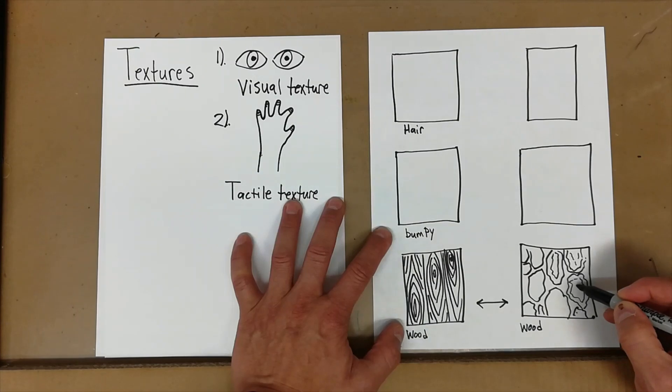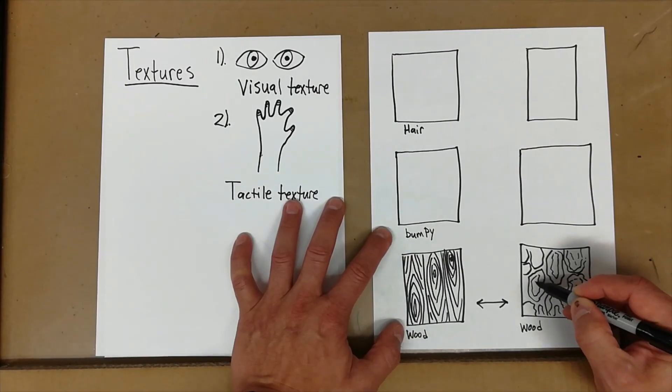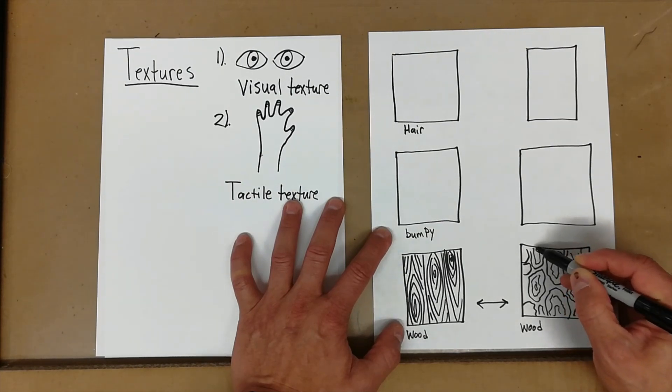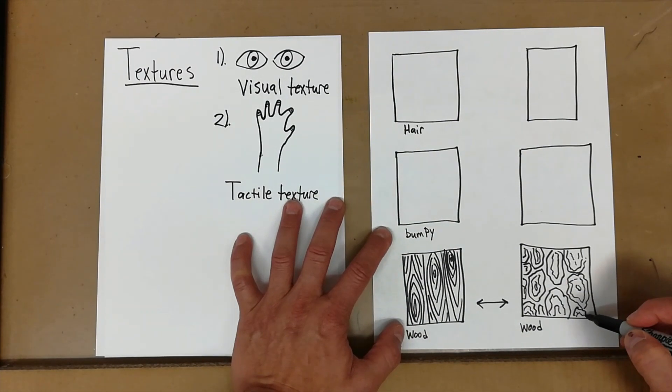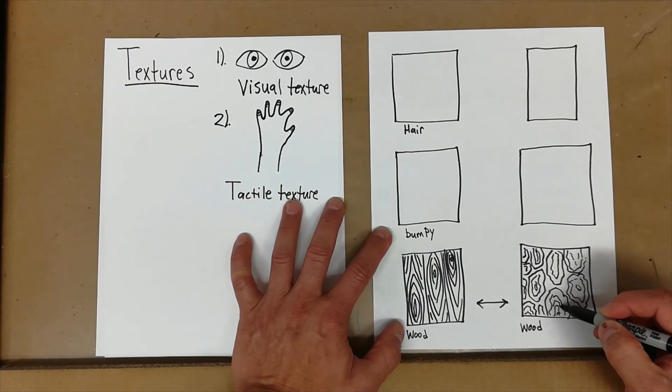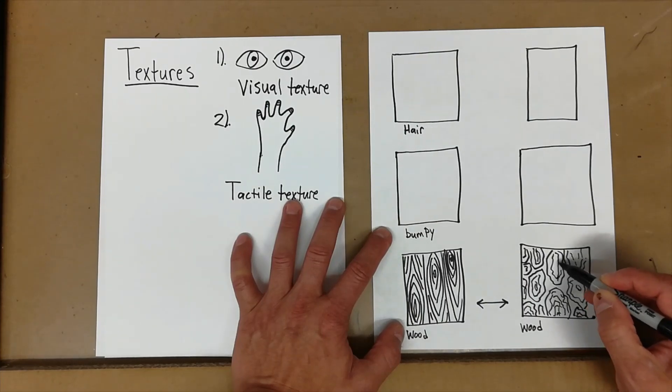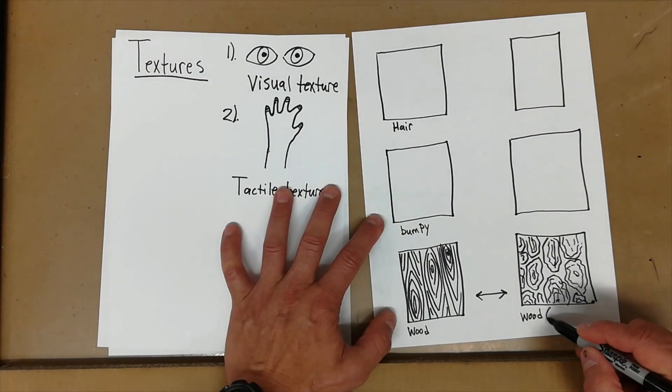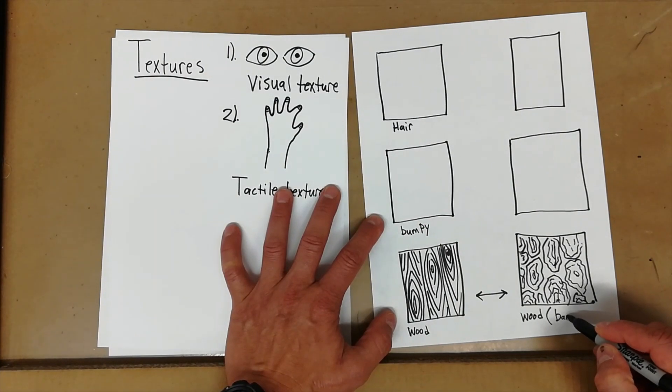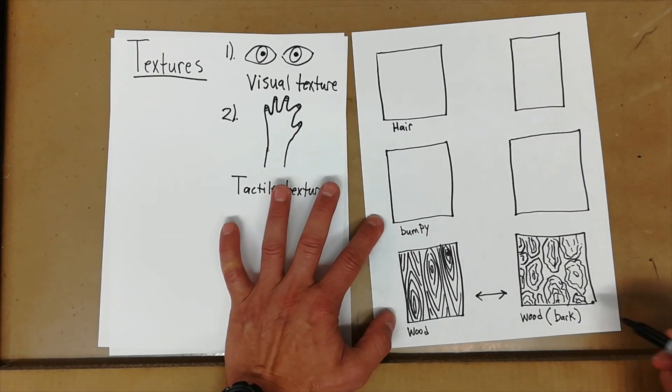Remember, the more details you add, the more realistic it looks. People love details. You don't have to do all these. Basically, I'm trying to remember the picture and I'm just drawing little squiggly lines. Bark. So wood, this is bark, the outside of a tree.